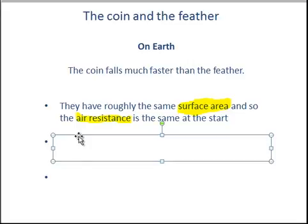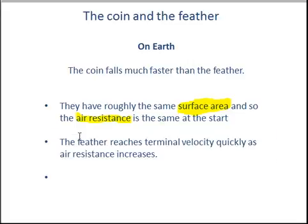But because the feather is so much lighter than the coin it reaches terminal velocity quickly. If we recap, terminal velocity occurs when the force of air resistance and the force of weight are balanced. Because feathers have such a low weight it doesn't take much air resistance to balance it out. So the feather doesn't gain a very high speed because it reaches terminal velocity so quickly.